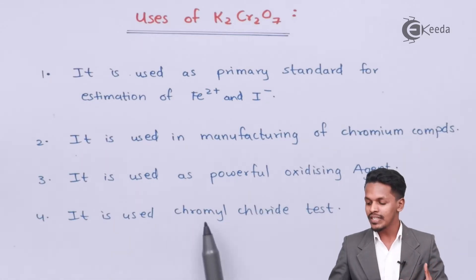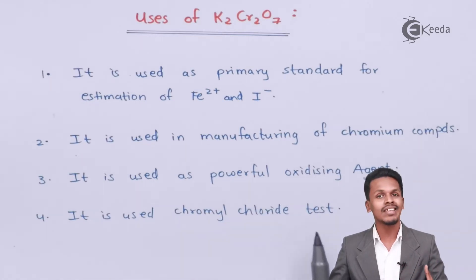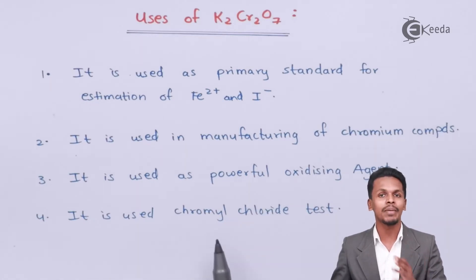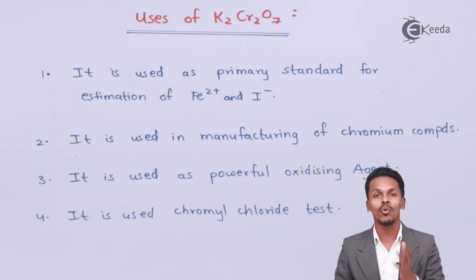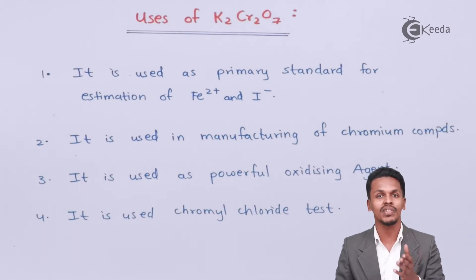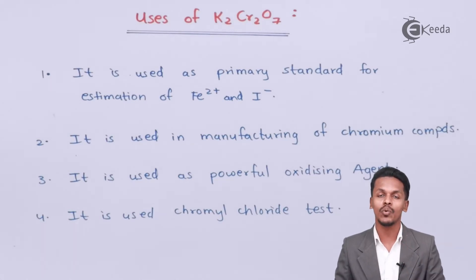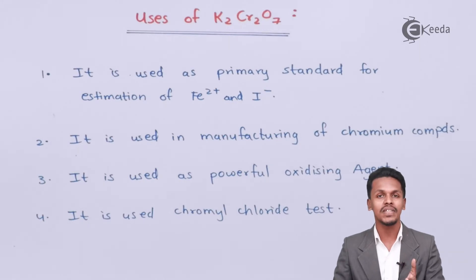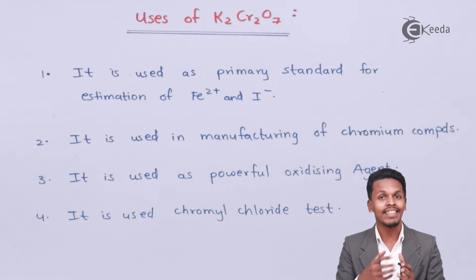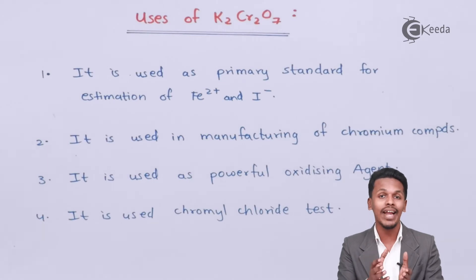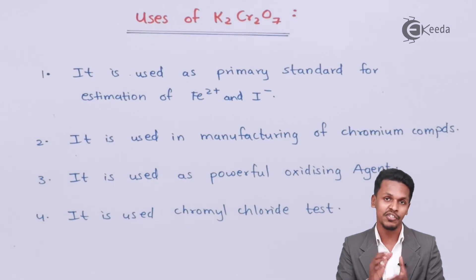K₂Cr₂O₇ is also used in the chromyl chloride test to estimate the presence of chloride ions in a solution. When acidified K₂Cr₂O₇ reacts with sodium chloride, there is a color change to form chromyl chloride, which is only formed when chloride ions are present in the solution.